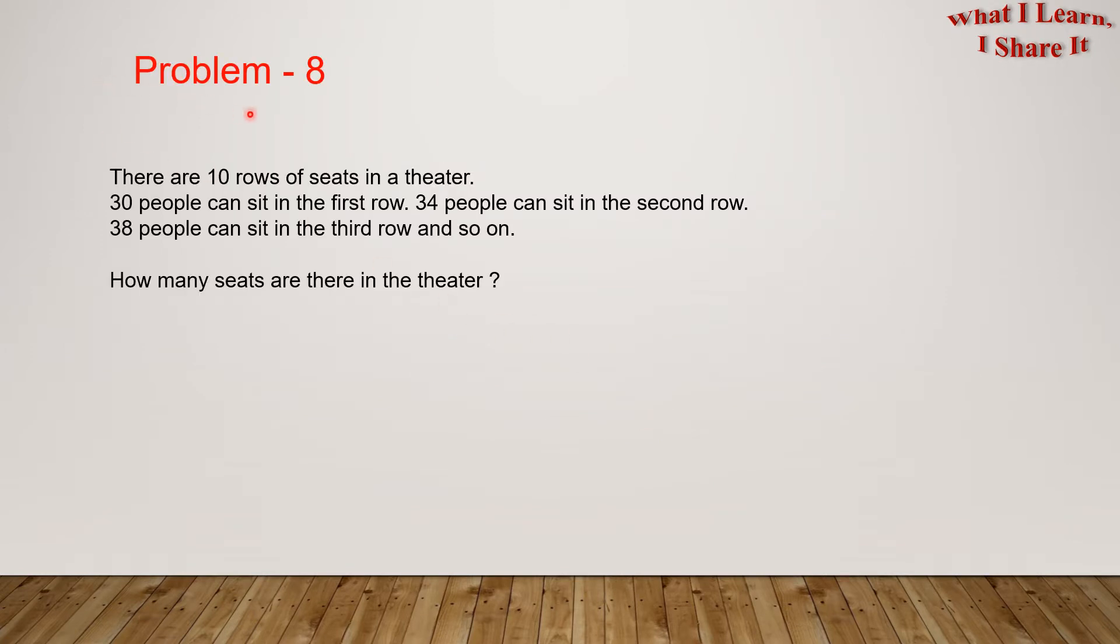Problem 8. There are 10 rows of seats in the theater. 30 people can sit in the first row. 34 people can sit in the second row. 38 people can sit in the third row, and so on. How many seats are there in the theater?